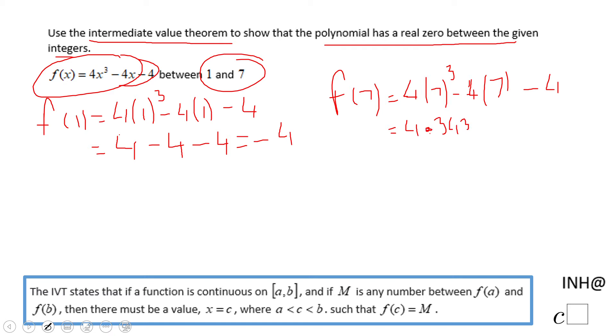So we have 4 times 343 minus 4 times 7 minus 4. Four times 343 equals 1372.